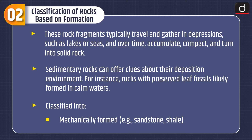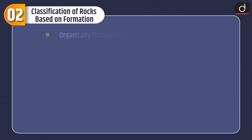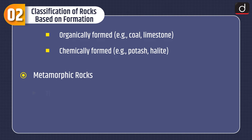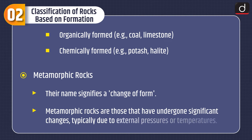Sedimentary rocks can offer clues about their deposition environment. For instance, rocks with preserved leaf fossils likely formed in calm waters. They are classified into mechanically formed, e.g. sandstone and shale; organically formed, e.g. coal and limestone; and chemically formed, e.g. potash and halite.